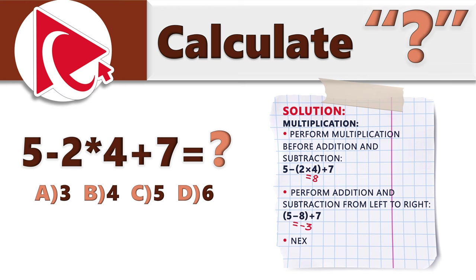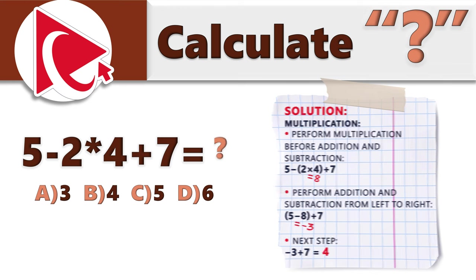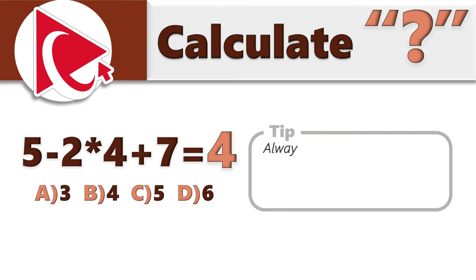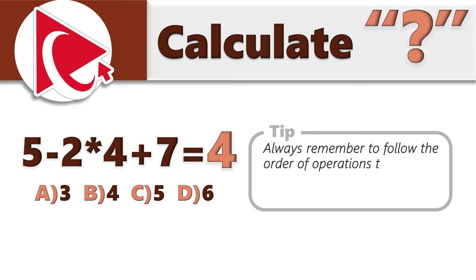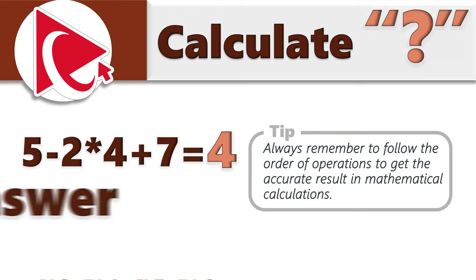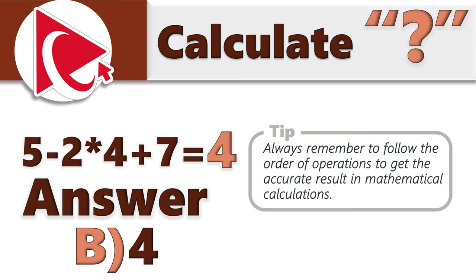Next step: minus 3 plus 7 equals 4. The tip here is to always follow the order of operations to get accurate results in mathematical calculations. The correct answer here is choice B, 4.